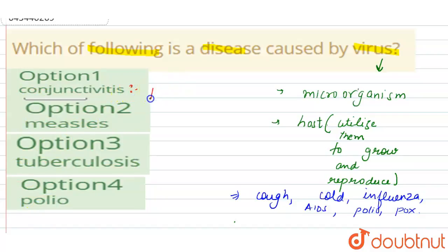If we talk about conjunctivitis, it is also called pink eye. It affects the conjunctiva part of the eye. This is caused by allergic or bacterial reactions.